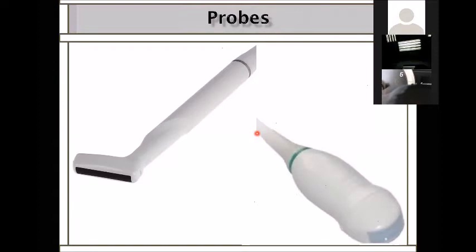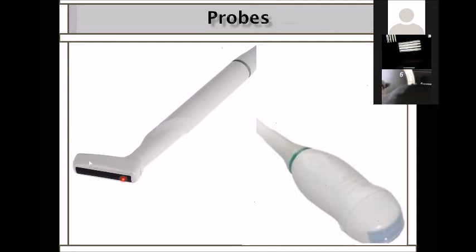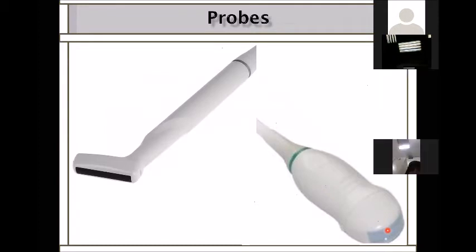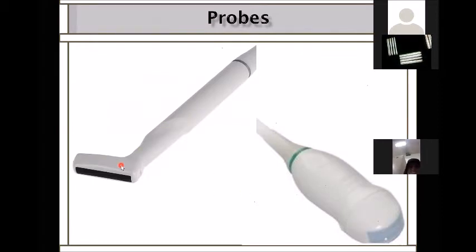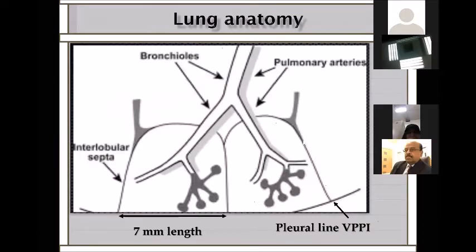In pediatric ultrasound we have two probes. The straight probe—sometimes shaped like a hockey stick—produces a square/rectangular image and is high frequency, so it looks at the superficial surface of the lung. Then we have the curvilinear probe, which is low frequency so it can look at deep lung structures, and the image will be fan-shaped, wider as you go deeper. Remember: straight equals high frequency; curvilinear equals low frequency.